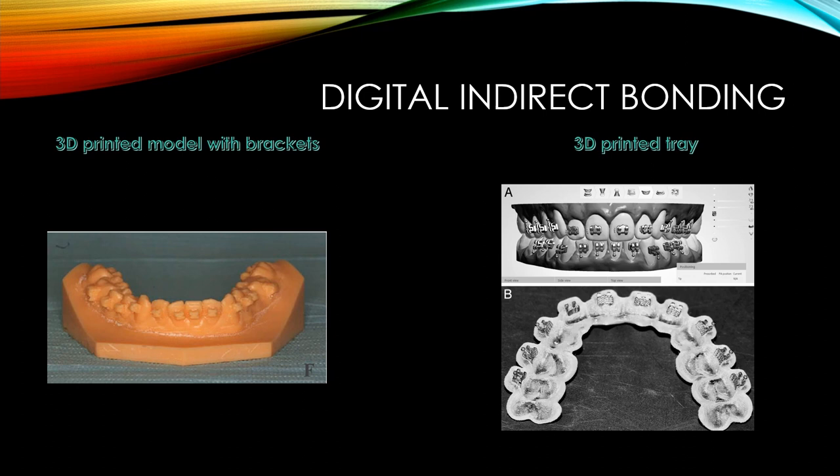One of the most common applications is digital indirect bonding, which has two techniques. The first is 3D printing the model with brackets — after virtually placing the brackets — and then vacuum forming a tray on this model. The second approach is designing the tray virtually on the computer and directly 3D printing it, then placing the brackets into the printed tray.